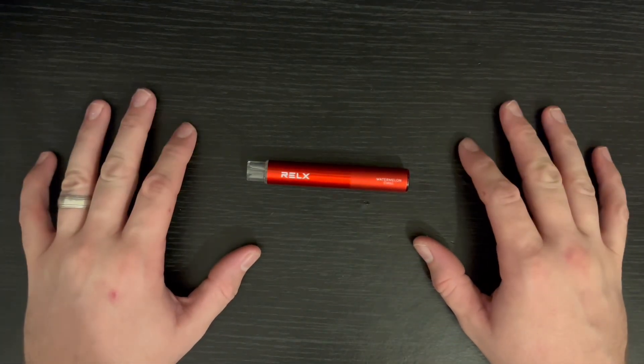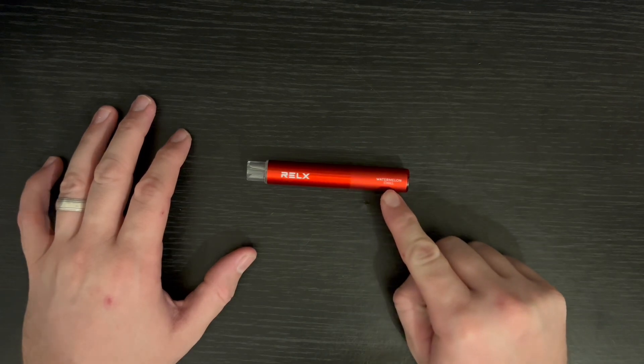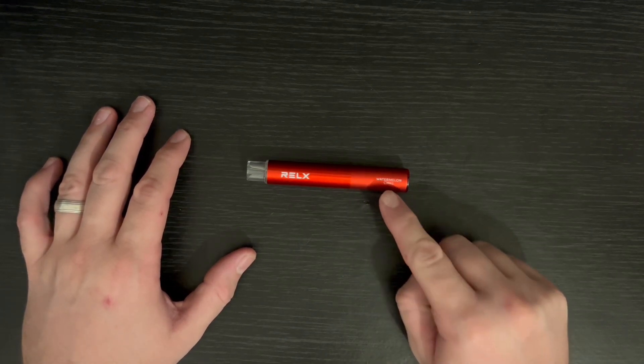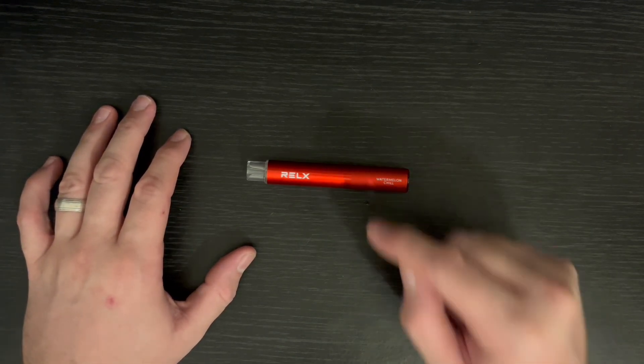This should hopefully be a simple one. I'm hoping for a quick easy one today. It's a watermelon chill and it cost me five pounds and ninety-nine pence, and it is a 600 puff.